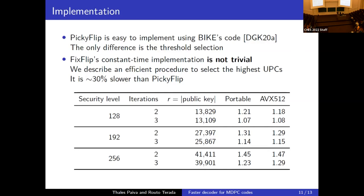There is a trade-off between the number of iterations and the block size R (which is also the public key size). This trade-off is not available with BGF, because BGF cannot work with a lower number of iterations.